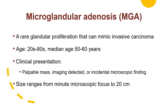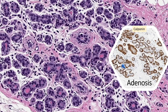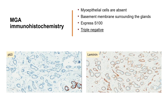Patient age has a wide range. Patients may present with a palpable mass, screening-detected abnormality, or incidental microscopic finding. MGA is composed of small, round glands with bland cytology infiltrating the stroma, with no stromal reaction. It has a single layer of cuboidal epithelial cells and no myoepithelial cells. There is often secretion in the lumen, but this is not specific for the diagnosis. Different from conventional adenosis, where glands are usually surrounded by myoepithelial cells, MGA glands lack myoepithelial cells but are surrounded by basement membrane — used to confirm the diagnosis. It is triple negative and expresses S100.